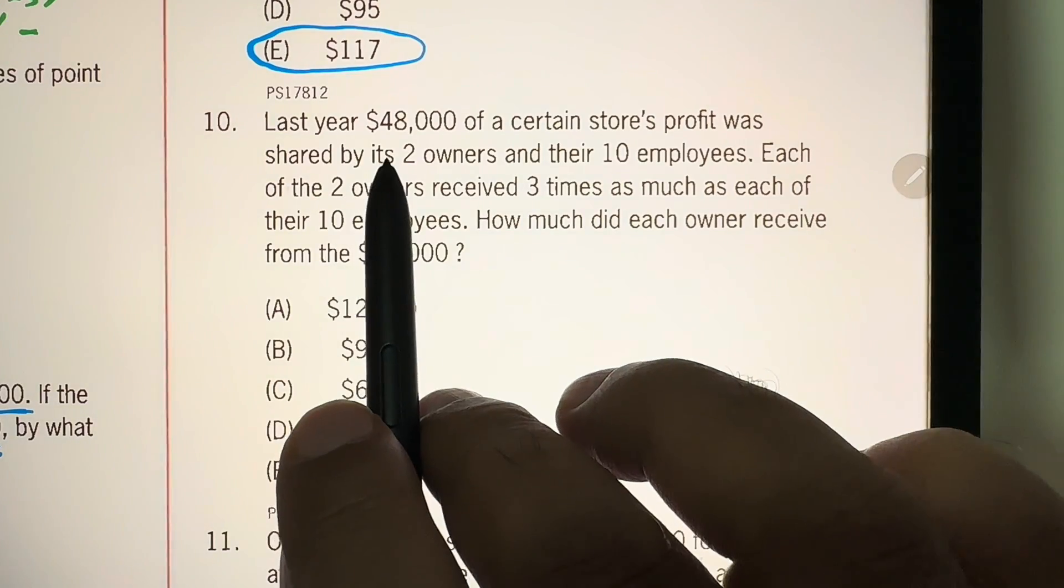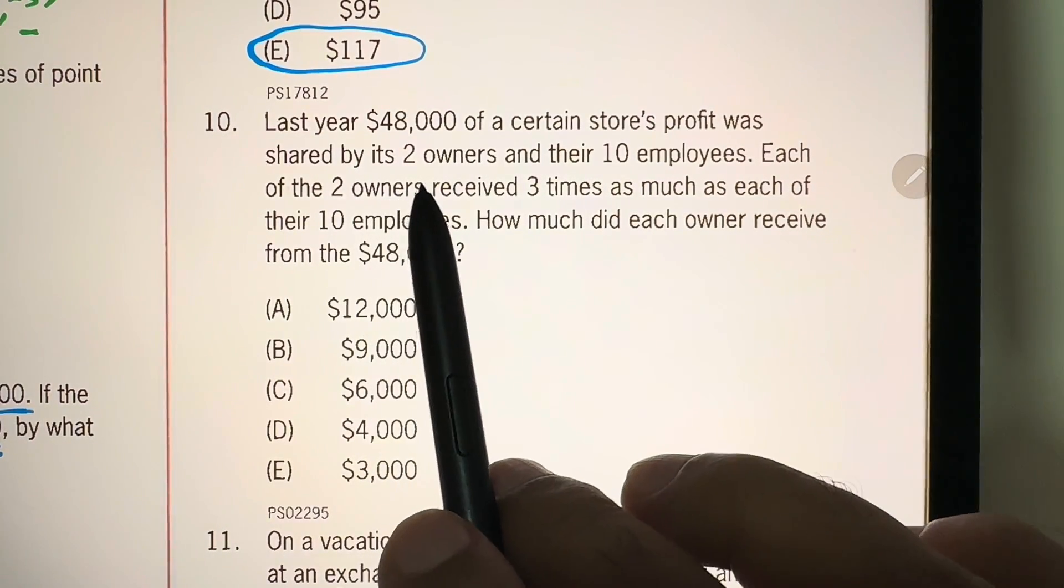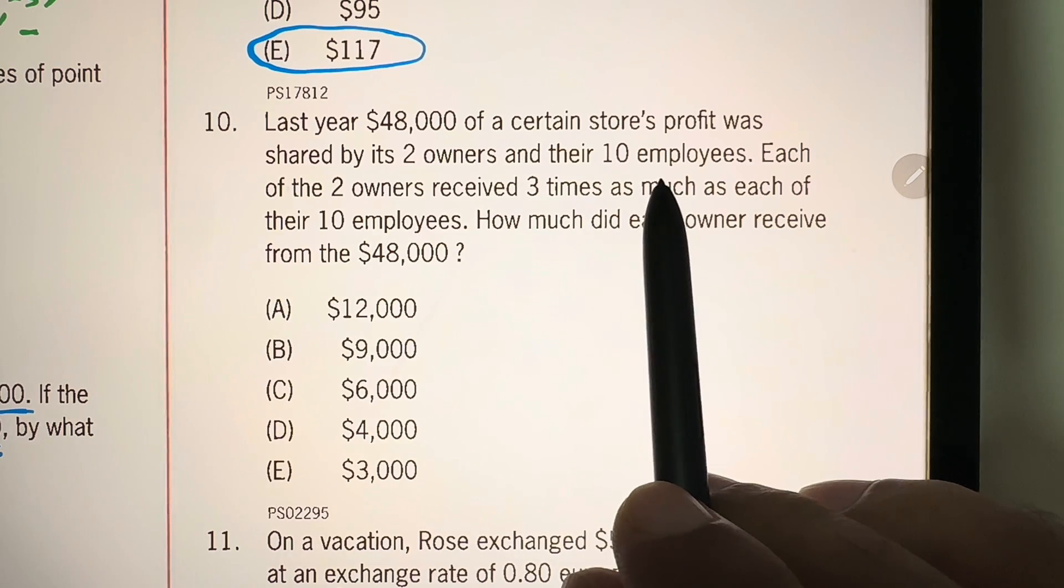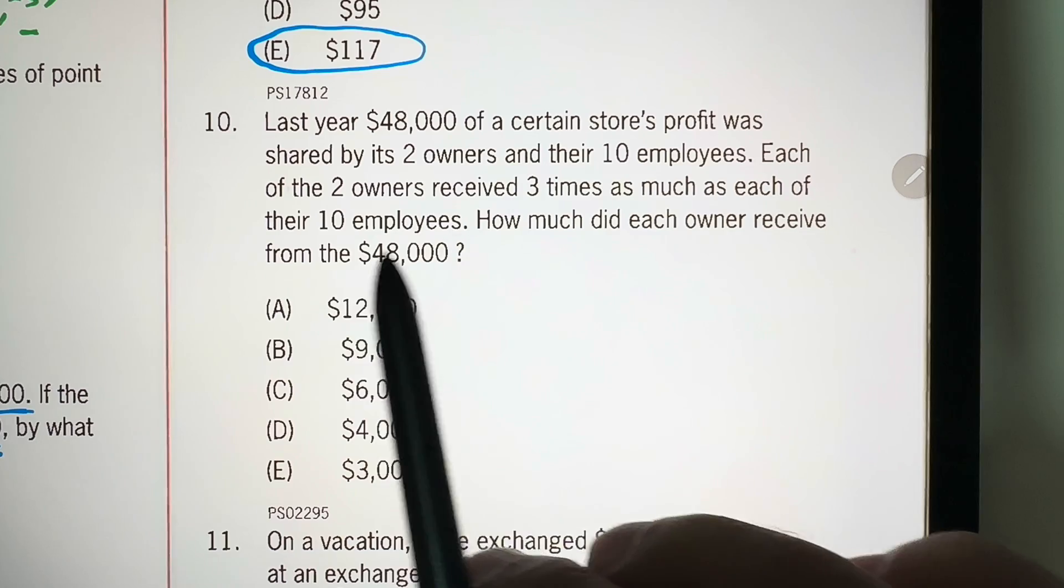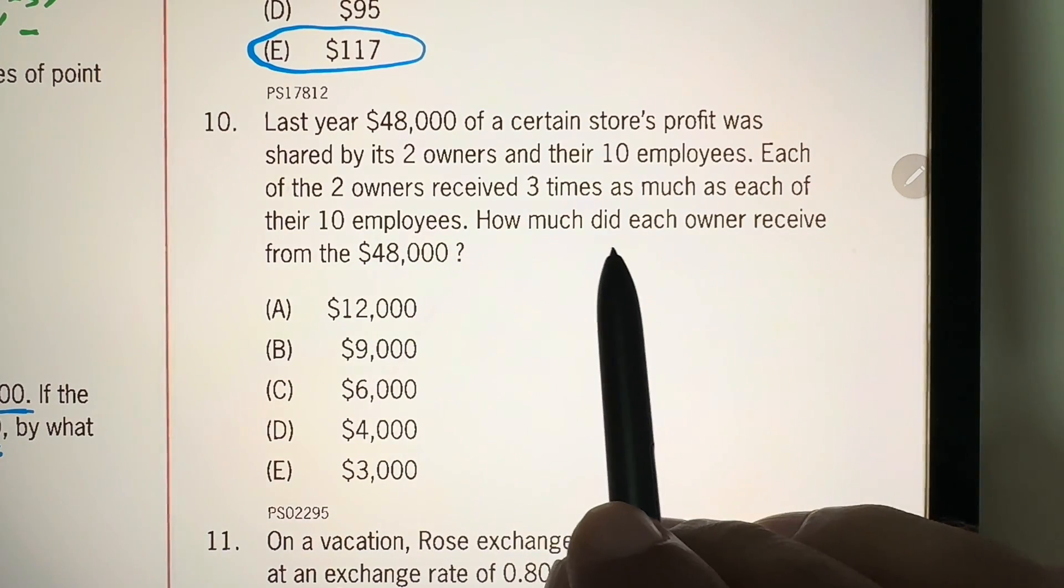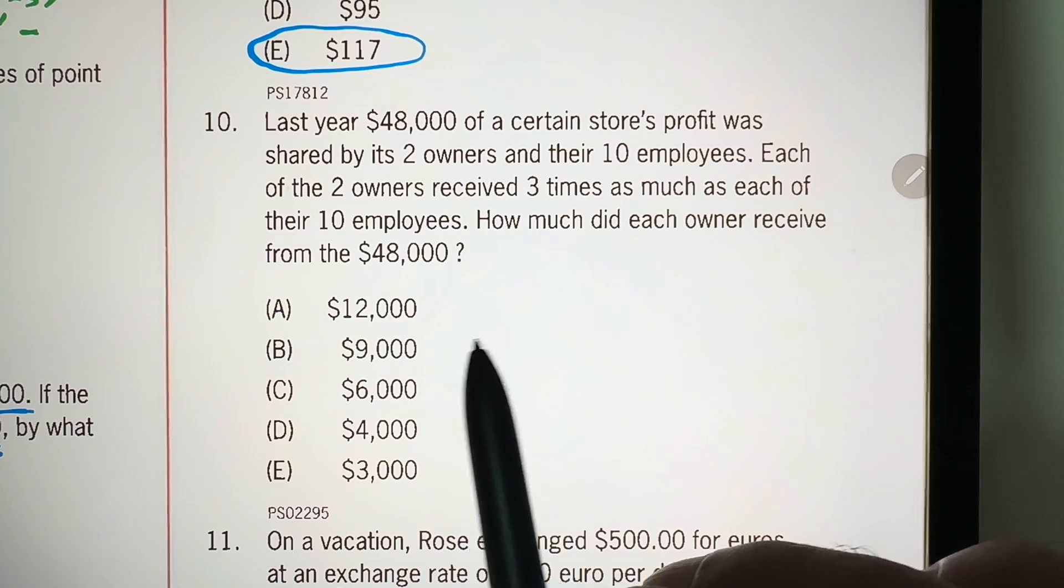Last year, $48,000 of a certain store's profit was shared by its two owners and their 10 employees. Each of the two owners received three times as much as each of their 10 employees. How much did each owner receive from the $48,000?